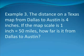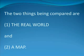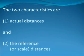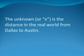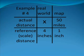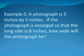Example number three. The distance on a Texas map from Dallas to Austin is 4 inches. If the map scale is 1 inch equals 50 miles, how far is it from Dallas to Austin? The two things being compared are the real world and a map. The two characteristics are actual distances and the reference or scale distance. The unknown is the distance in the real world from Dallas to Austin. This is how the tic-tac-toe board should be filled out.